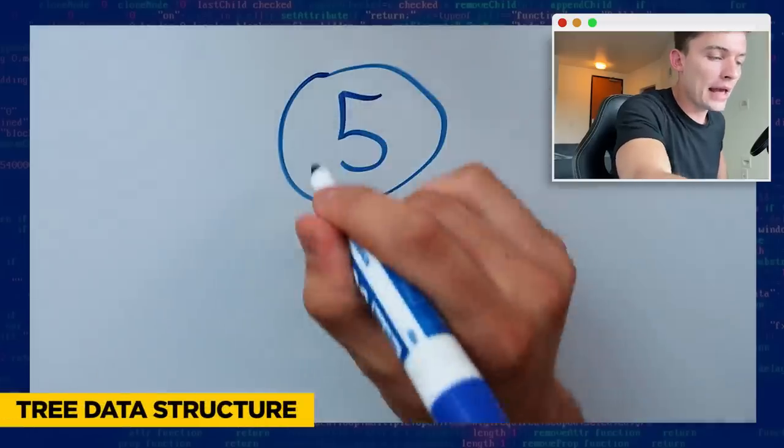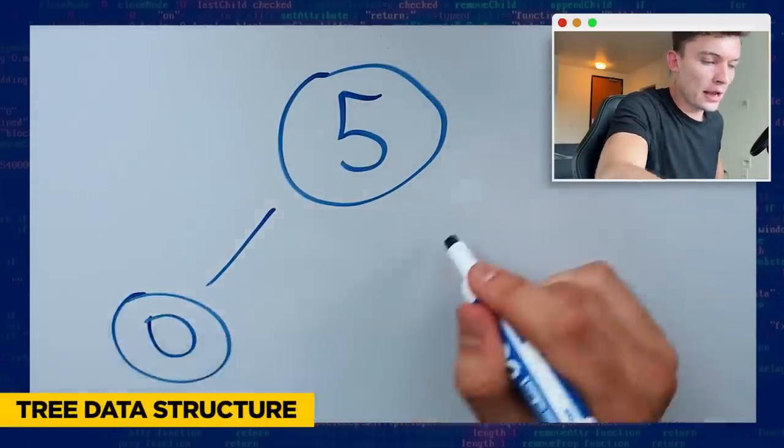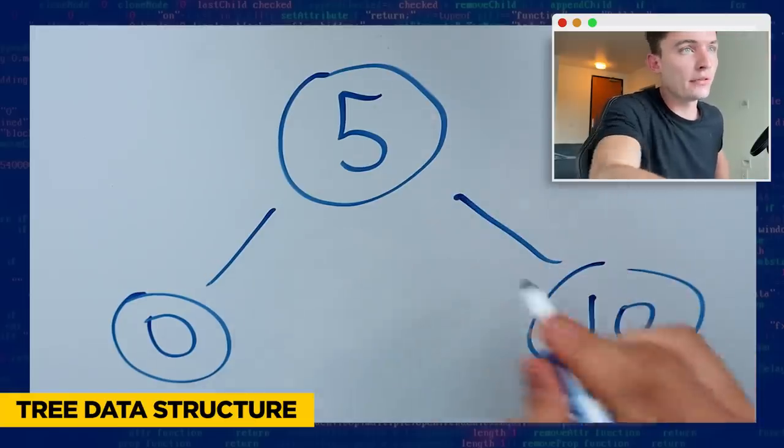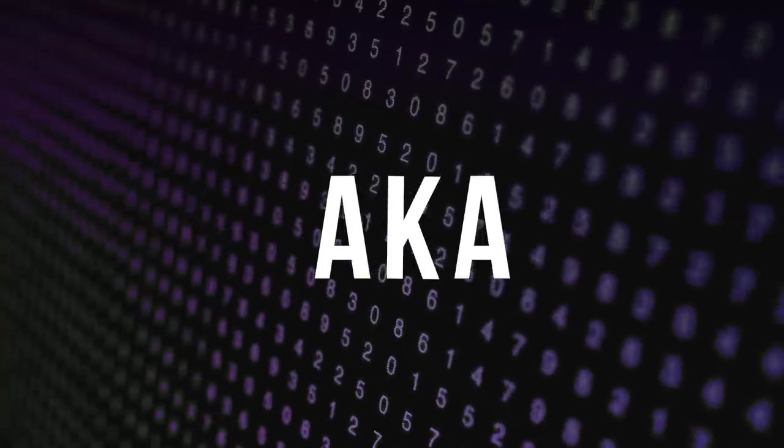Trees are data structures for storing numbers. If we had five at the top, everything to the left would have to be smaller than it, so this could be zero. Everything to the right would have to be bigger than it. This is true for every single node. Variables can store some data in them, and that data can change, as you can see here, aka their variable.